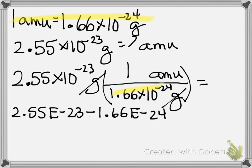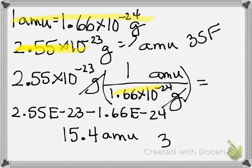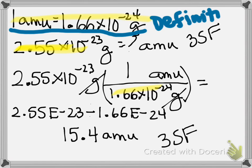When you put that in your calculator, you should end up with an answer of 15.4 AMUs. I write this as only 15.4 because of significant figures — this number I was given has only 3 sig figs, so my answer can only have 3 sig figs. The conversion factor doesn't limit significant figures because it's a definition, and definitions have unlimited significant figures.